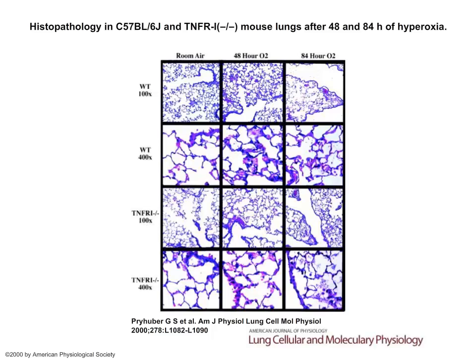Looking at these images, you can see the effect of pure oxygen on mouse lung epithelia over time — the cell walls break down and the spaces get bigger, meaning you become less able to take up oxygen because the oxygen is destroying your lung epithelia.